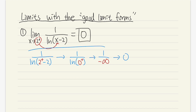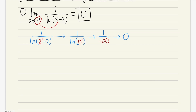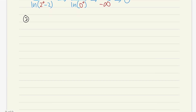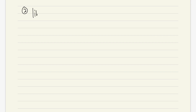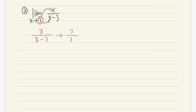Usually I will just show this kind of work. Now let's take a look at another example. Let's say we have the limit as x approaching 3 of x over x minus 3. Let's go ahead and plug in 3 into all the x's and see what happens. It looks like we have 3 over 3 minus 3, so the top is 3 and the bottom is 0.